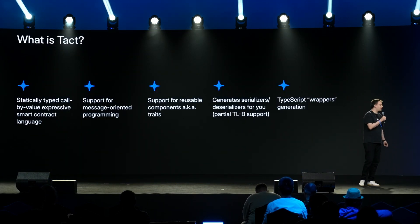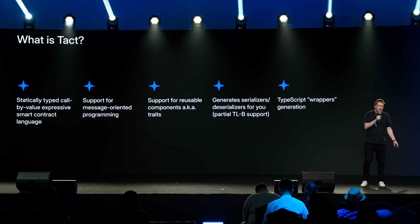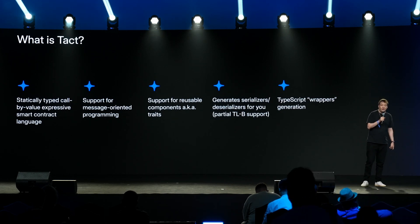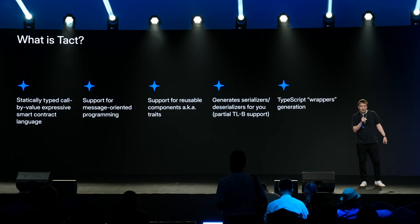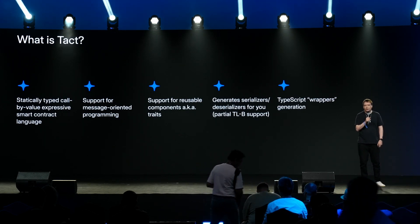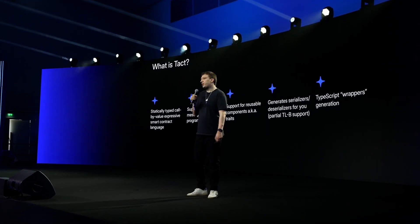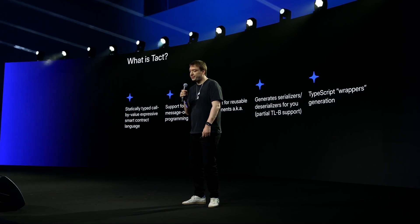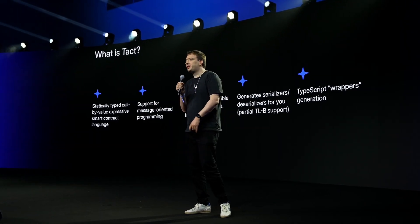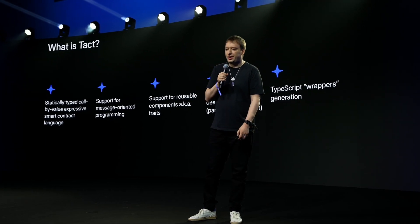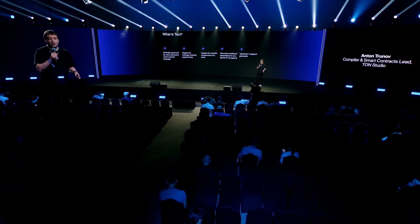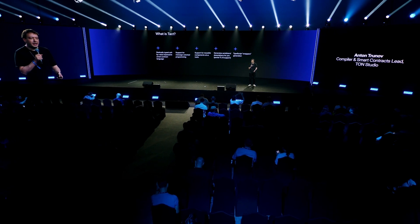What is TACT? It's a statically typed, call by value, very expressive smart contract language. It has support for message passing, which is inherent to the TON Blockchain architecture. It has support for reusable components called traits, and also libraries. It generates serializers and deserializers for you. It has partial TLB support at this moment, and also generates TypeScript wrappers for local sandbox tests so you can emulate contract behavior locally without going to slow testnet or mainnet.